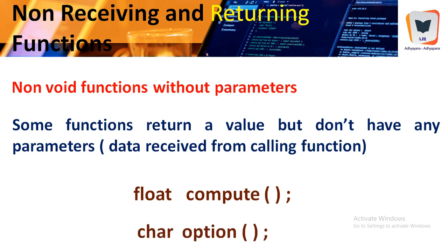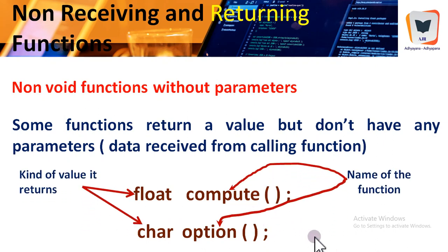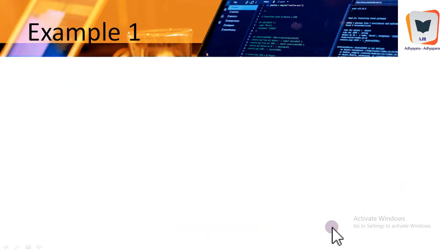One type of function returns a character value and another returns a float value. We will not deal with functions that return character type values here because that involves pointers — we will revisit that when we cover the pointers tutorial. The return type, name of the function, opening bracket, closing bracket, and any parameters together are called the signature of a function.